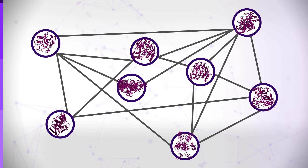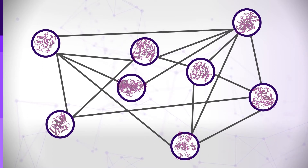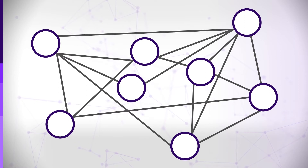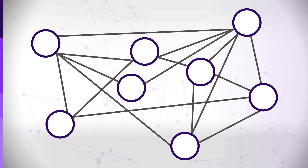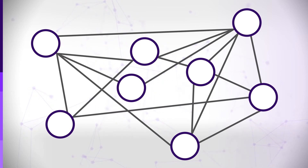In such networks, we typically represent each gene or each protein as a node, ignoring for a moment everything we know about its physical, chemical and biological characteristics. We describe it as a characterless junction — a position in a network of nodes. Then, every interaction between two genes or every interaction between two proteins is represented as an edge connecting two nodes.